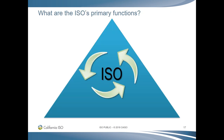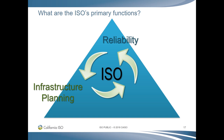So far, we've explained a little about who the ISO is and our history. Now, over the next few slides, we'll discuss what we do. The ISO is registered with NERC as a Balancing Authority, a transmission operator, transmission service provider, planning coordinator, and a market operator. Together, these roles are grouped into our core functions: infrastructure planning, reliability, and market operations.